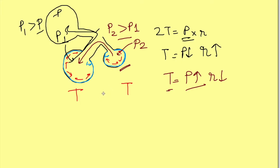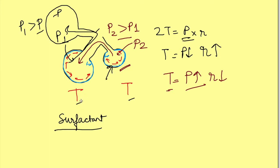That means this law as such is not fully manifesting here — something is preventing it, and that thing is surfactant. Surfactant reduces the surface tension in the alveoli. It reduces tension in both alveoli, but the effect of surfactant in the smaller alveolus is much greater than in the larger alveolus.